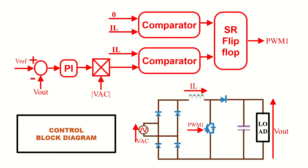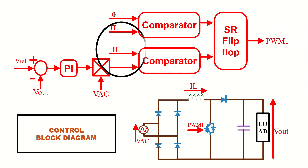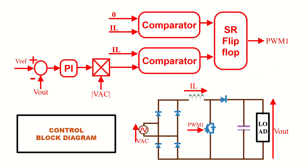This is the complete control block diagram of the critical conduction mode PFC. A reference voltage of 400 volts is compared with the actual output voltage and given to a PI controller. The output of the PI controller is multiplied with the absolute value of the AC input voltage. The output of the multiplier goes to one terminal of a comparator, and the other terminal is connected to the inductor current to implement the zero switching logic. A second comparator terminal receives the value zero. The outputs of both comparators are given to an SR flip-flop, and the flip-flop output is connected to the gate terminal of the MOSFET, completing the control block diagram.